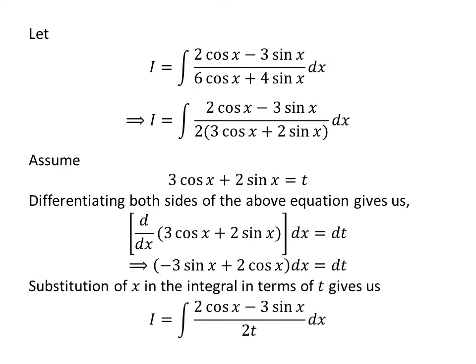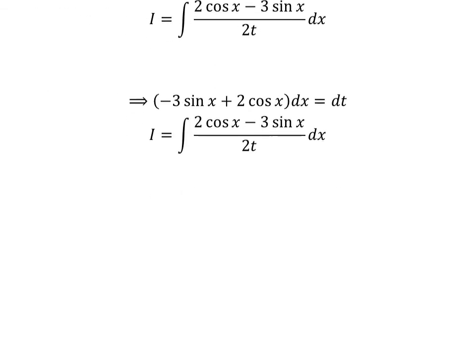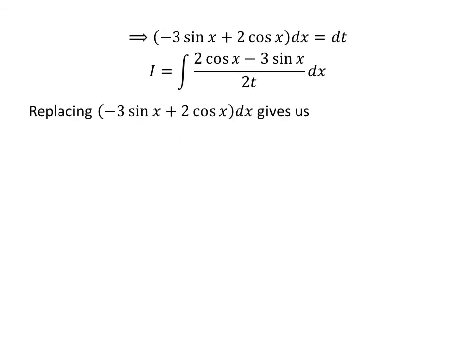Substituting 3 times cosine of x plus 2 times sine of x by our assumed value t in the integral i gives us i is equal to the integral of 2 times cosine of x minus 3 times sine of x upon 2 times t. Now, replacing minus 3 times sine of x plus 2 times cosine of x times differential of x by differential of t, so i is equal to the integral of 1 upon 2t with respect to t.